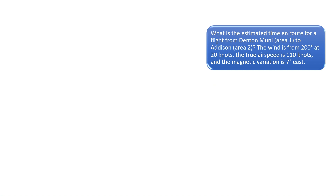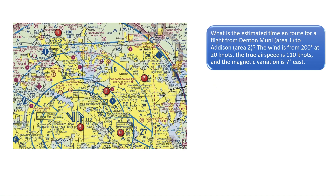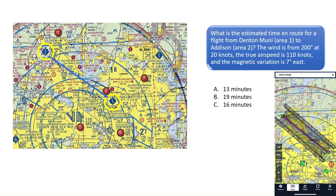Question 1. What is the estimated time and route for a flight from Denton Municipal Airport in area 1 to Addison in area 2? The wind is from 200 degrees at 20 knots, the true airspeed is 110 knots, and the magnetic variation is 7 degrees east. To solve this problem we first need to calculate the true course and distance between each airport. Using the ForeFlight app we can use the ruler function to find the true course of 128 degrees and the distance of 22.5 nautical miles.